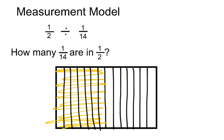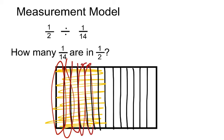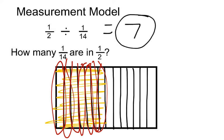And now I can say, okay, well, how many 14ths are there in just 1 half? Well, I have 1, 2, 3, 4, 5, 6, and 7. So there are 7 fourteenths. So my answer to 1 half divided by 1 fourteenth is 7. There are 7 wholes.